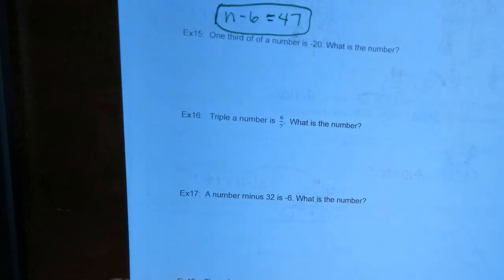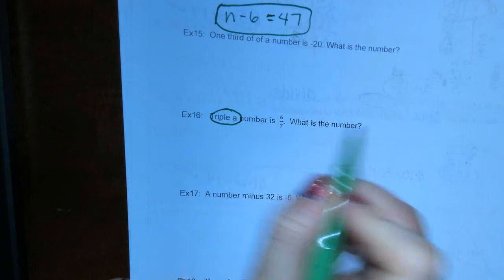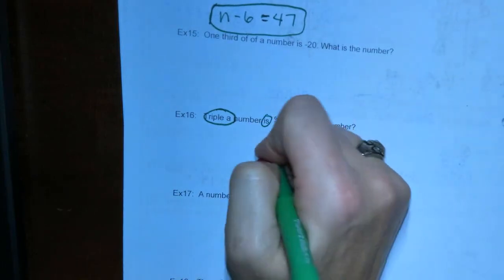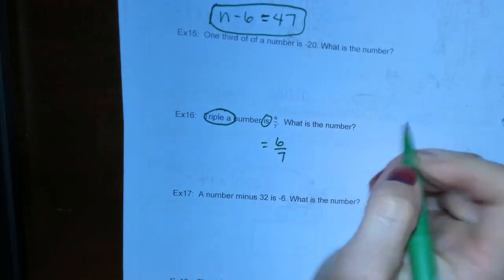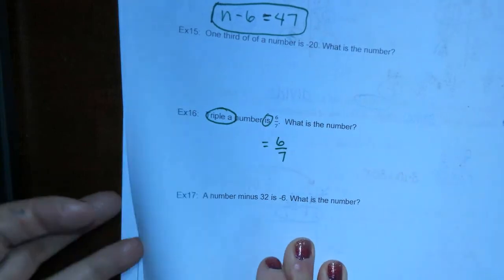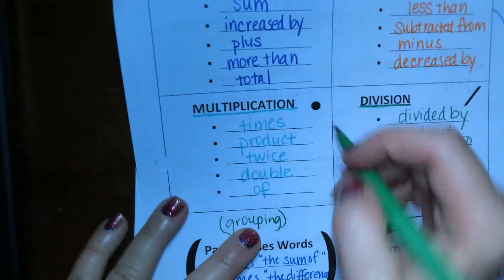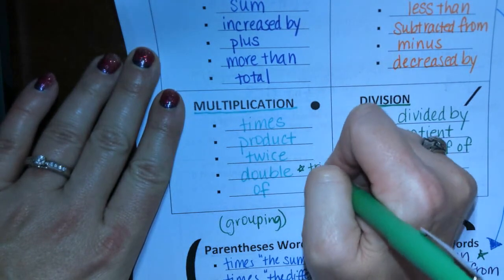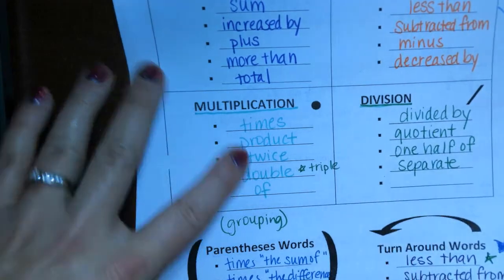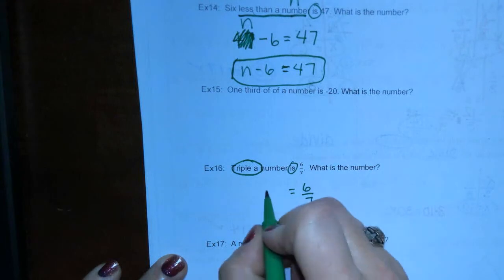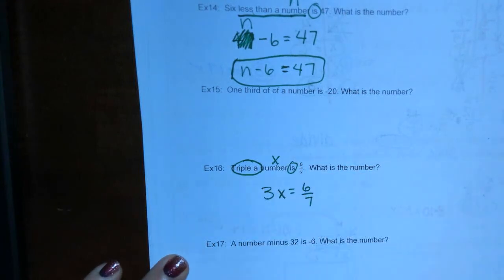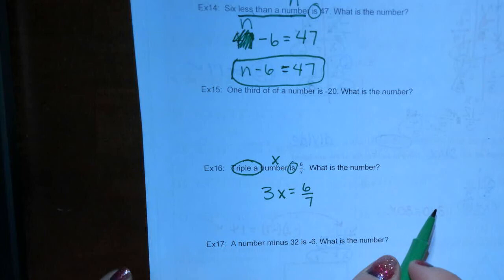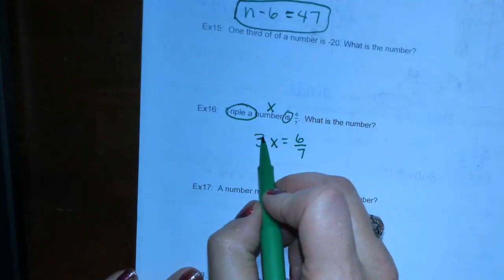Number 16: triple a number. 'Is' means equals, so that's going to equal 6 over 7. Looking at our chart, triple falls in the same category as multiplication — like double, triple, quadruple. Triple means three times, so three times a number — we'll say x — equals 6 over 7.